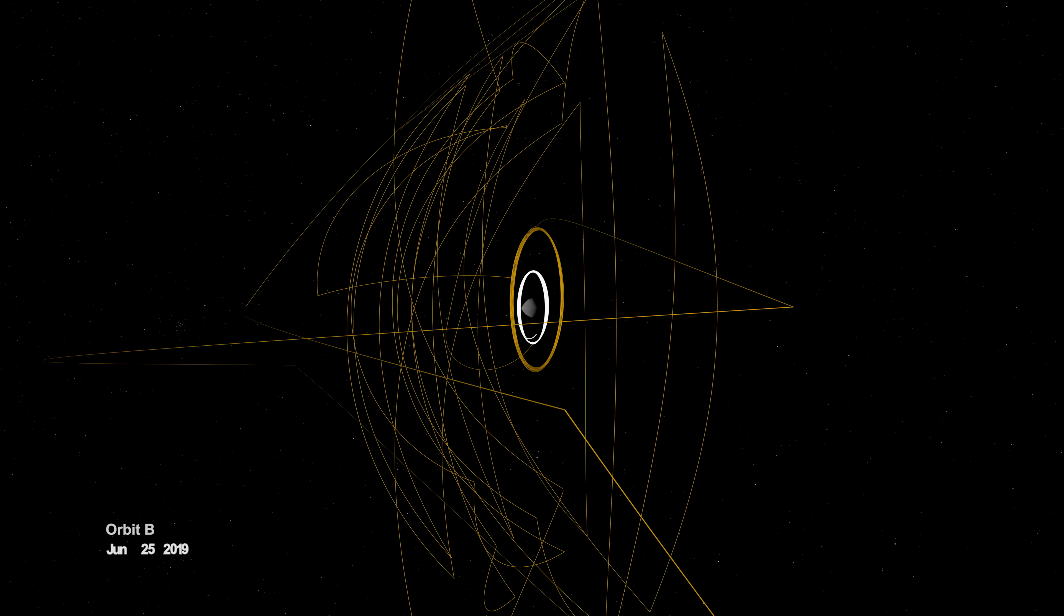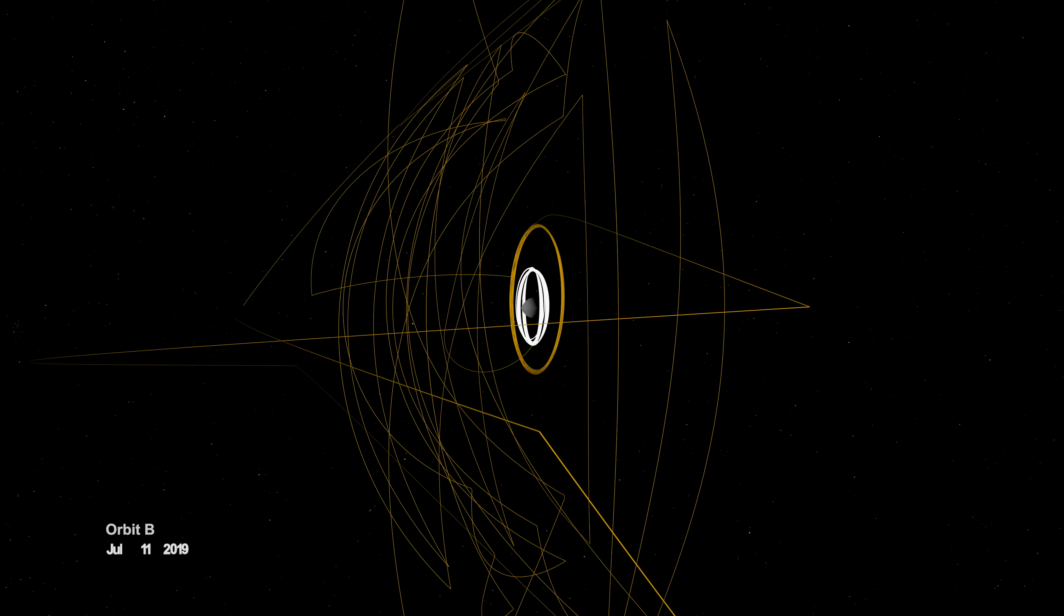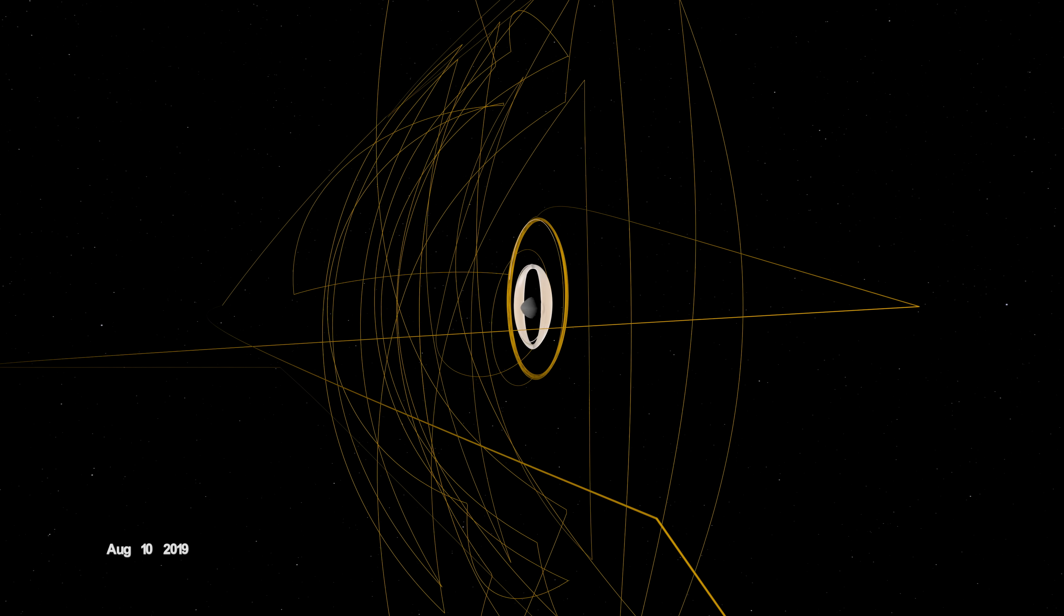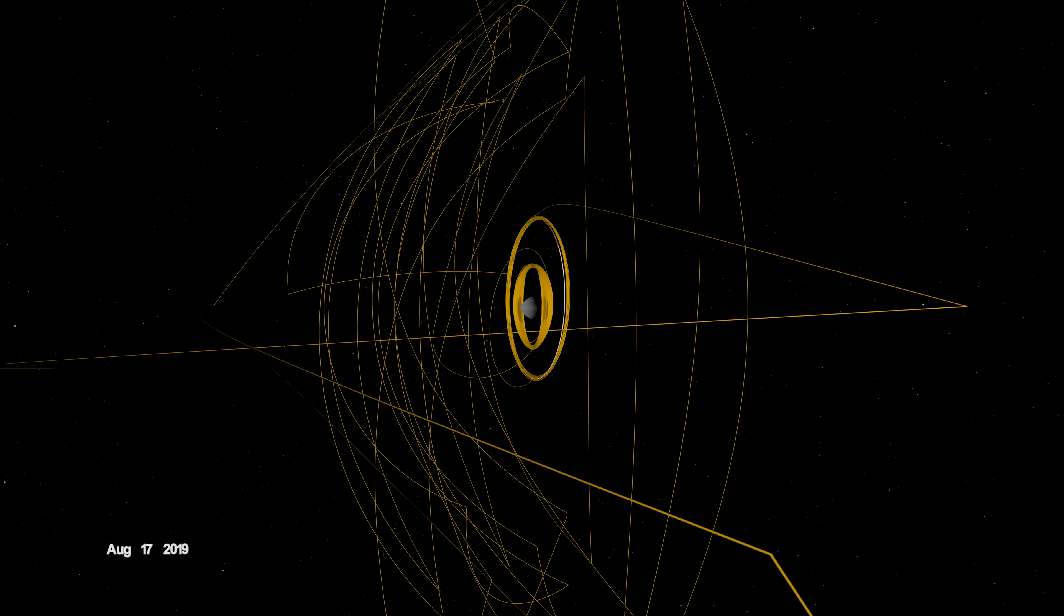On June 12, the spacecraft entered a new orbit at an altitude of just 680 meters, setting another record and establishing a home orbit for the remainder of the mission.